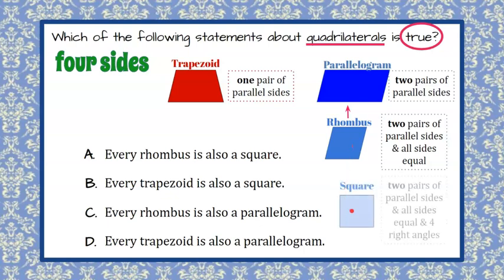Now we're going to also talk about a square. A square, by definition, has two pairs of parallel sides, and all four sides are equal, and it has four right angles.